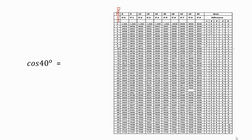Our next example is cos(40°). After 40 degrees there are no minutes, so we have to choose 40 degrees from the very first column and observe its value under 0 minutes, which is 0.7660.